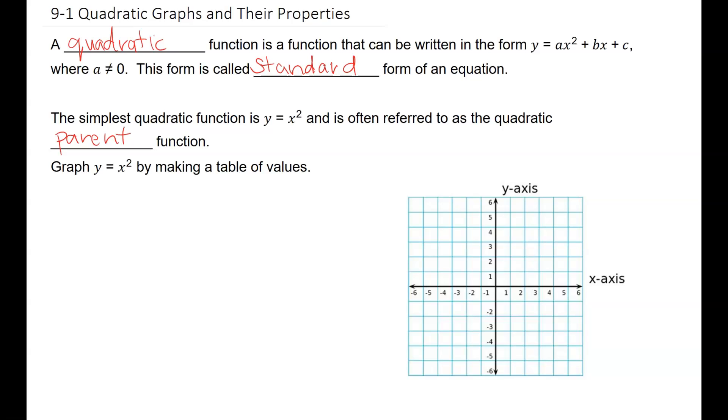The simplest quadratic function is y equals x squared. The value of a here is 1, and we don't have a bx plus c here. We call this the quadratic parent function. So this is the most basic form it can be.